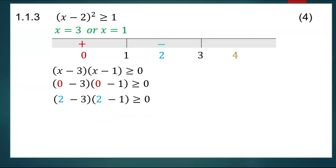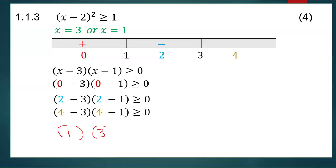A value bigger than three is four. When you substitute four, in the first bracket you will have one, because four minus three is one. In the second bracket you will have three, because four minus one is three. One times three gives me positive three. So values of x that are greater than three will give a positive answer.